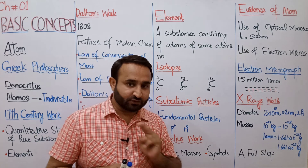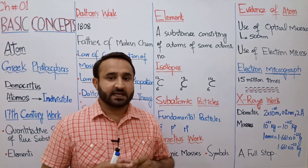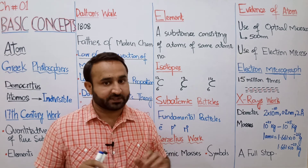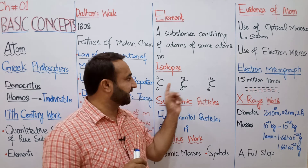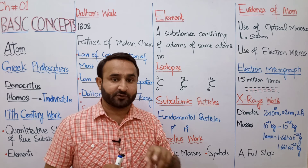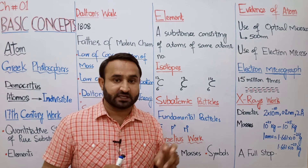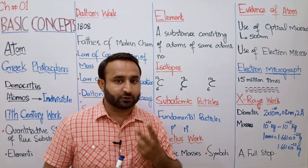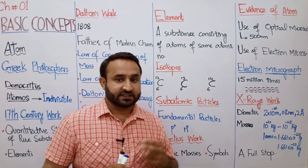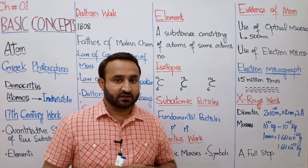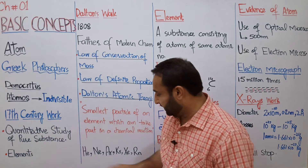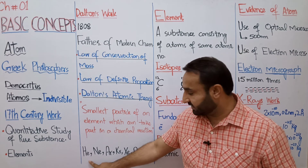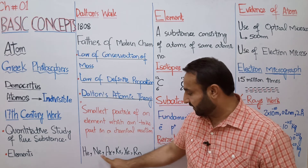Berzelius نے دو rules بھی دیے۔ پہلا: جن elements کا symbol single letter ہو وہ ہمیشہ capital letter میں لکھا جائے — جیسے C (carbon)، O (oxygen)، N (nitrogen)۔ دوسرا: جن elements کے symbols دو letters پر مشتمل ہوں، ان میں پہلا letter capital اور دوسرا small ہوگا — جیسے He (helium)، Ne (neon)۔